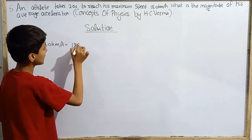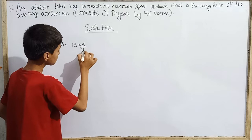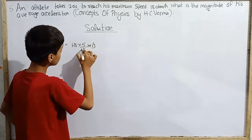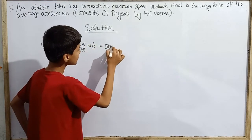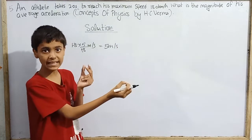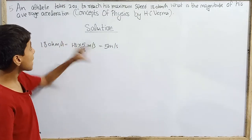Which is what? Which is 18 divided by 18 over 5, or 18 kilometers per hour equals 5 meters per second, which is the maximum speed of this athlete.